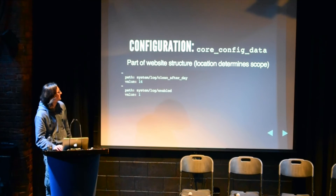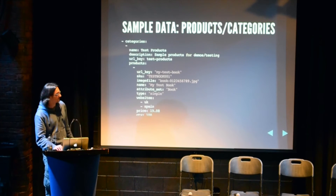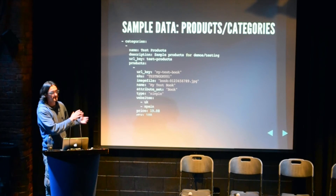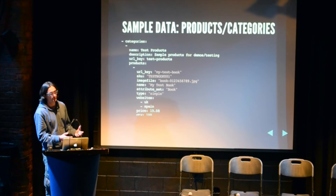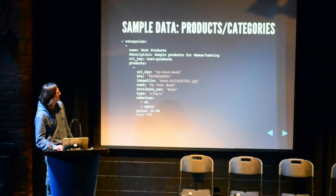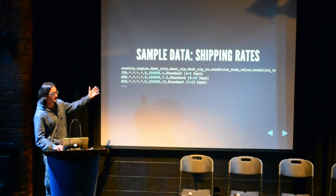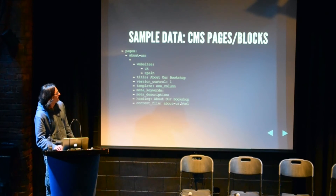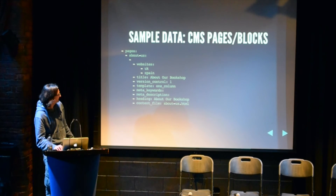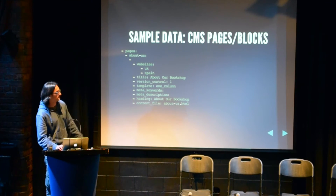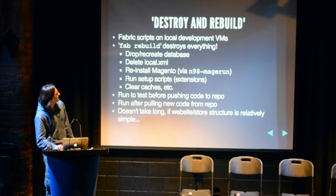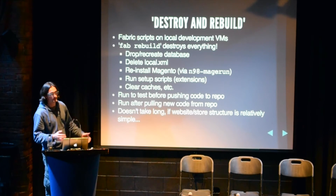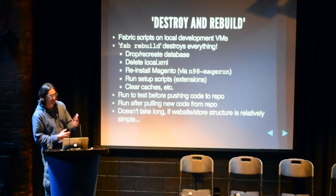You can define products and categories in this way as well — we added these features organically as we needed them. Product attributes can be defined in the YAML file so they can be easily deployed to different environments. Shipping rate data can be stored in a CSV file and applied to whichever environment. CMS pages follow the same principle: you define the page, the title, and the content goes in a separate file, making it easy to access and edit.